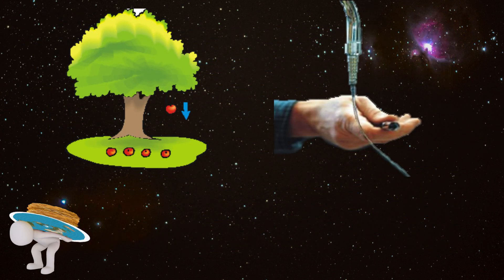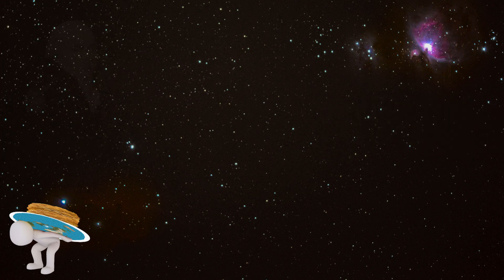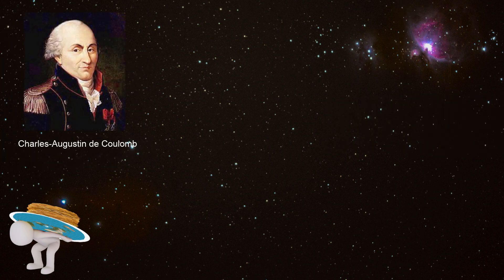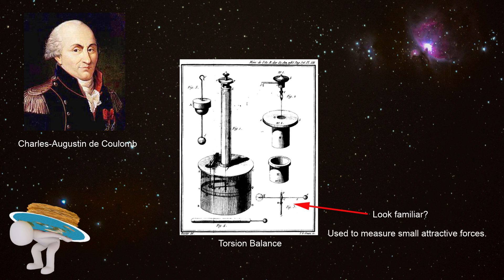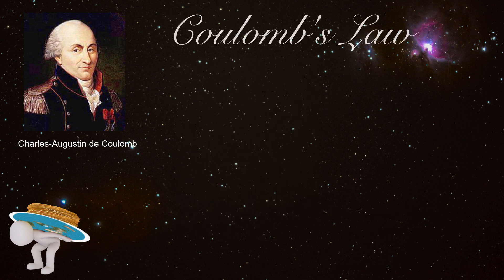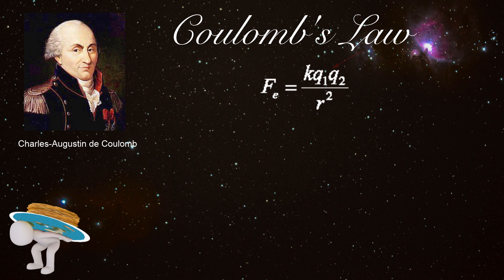Even the mathematical principles that govern electrostatics appear very similar to gravity. In the 1780s, French physicist Charles-Augustin de Coulomb studied electrostatics extensively to determine the physical properties that govern their interactions. Coulomb's work was the basis for future developments into electromagnetic theory, culminating in what became known as Coulomb's Law. This law states that the force we observe is equal to Coulomb's constant multiplied by the charge of two different bodies, divided by the radius squared.